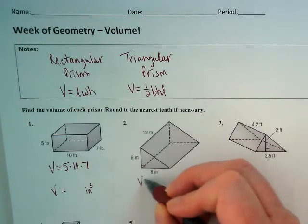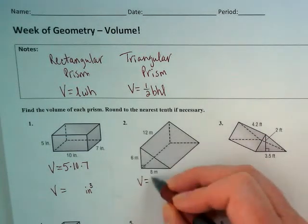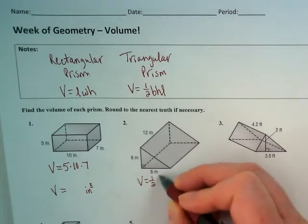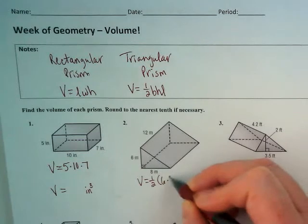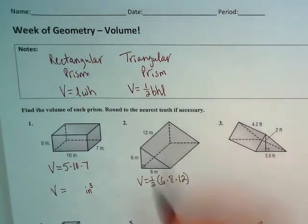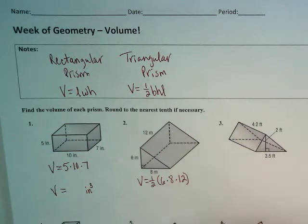So for this one we would set this up as volume equals one half, six, times eight, times twelve. So you'd multiply everything in the parentheses and then divide by two.